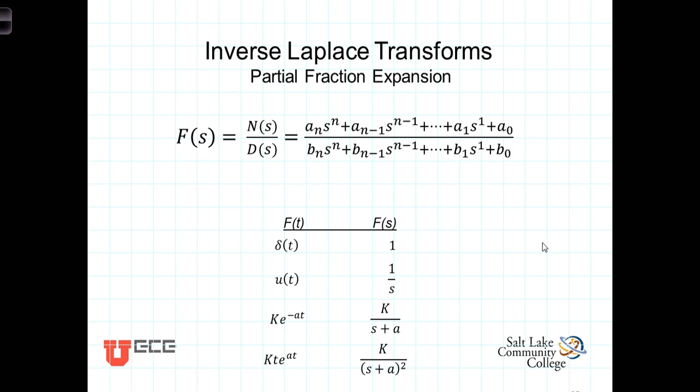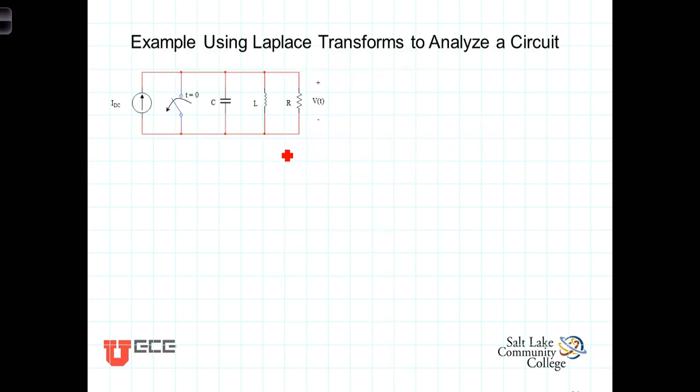As we've seen, the expressions for current and voltage in the Laplace domain are ratios of polynomials. V of S, I of S will be of this form with a numerator polynomial that we're going to call N of S and the denominator polynomial we're going to call D of S.